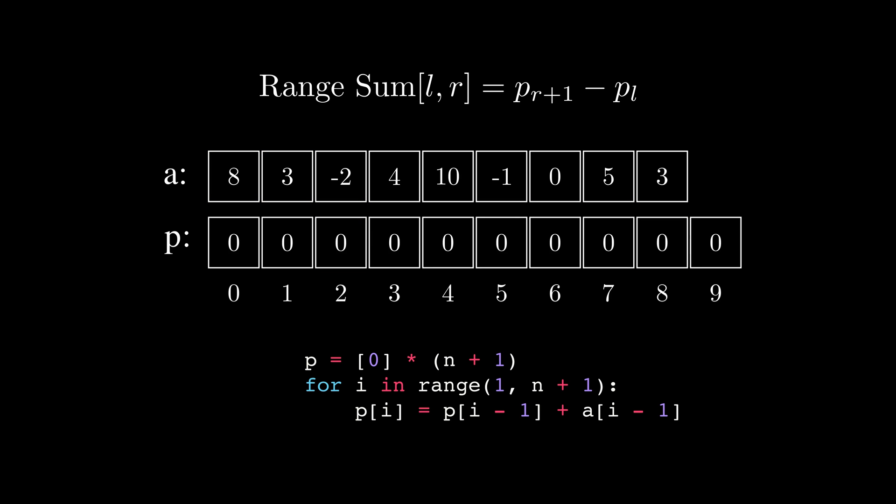Now let's see the algorithm in action. First we calculate the prefix sum array with the initial element being 0. Afterwards, each element is equal to the sum of its previous value and corresponding element in the initial array. Now we can answer any query with only a single operation.